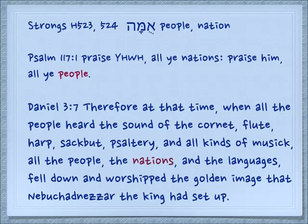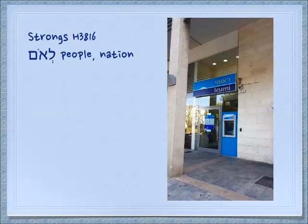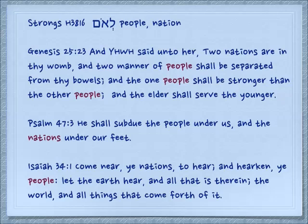Daniel 3:7: 'Therefore, at that time, when all the people heard the sound of the cornet, flute, harp, sackbut, psaltery, and all kinds of music, all the people, the nation and the languages fell down and worshipped the golden image that Nebuchadnezzar the king had set up.' Now there are other words for nations — we're going to see another couple of them in a minute. There's another word which is goi, goyim, which I covered in a different presentation, and I'll put a link for that below. So while we are here on Aleph-Mem, there is another word for nation/people which is le'om. And if you have ever been to Israel, you have seen the many banks — Bank Le'umi — which basically means the national bank. It is not related to the word for mother, Aleph-Mem; it has its own root, Lamed-Aleph-Mem.